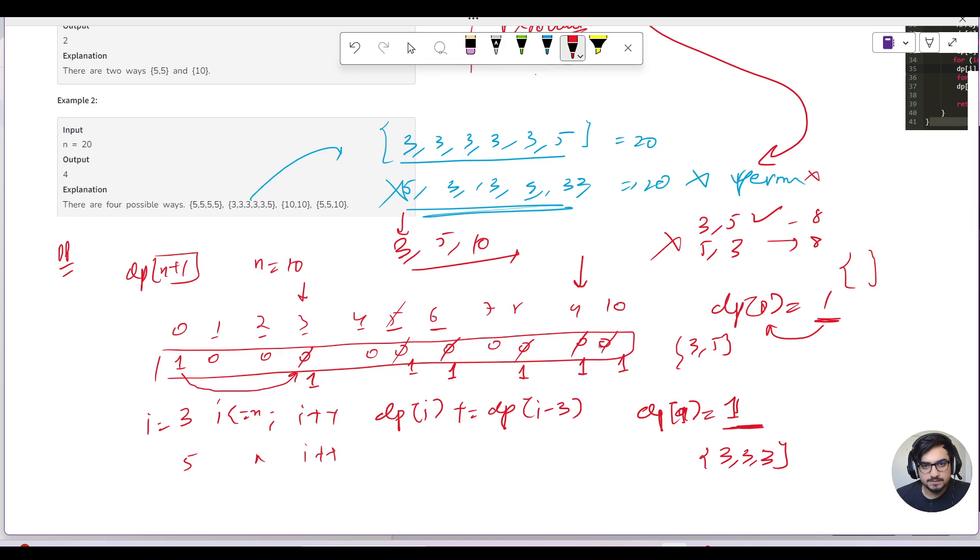Now let us update for the last, that is i=10. We'll start from i=10, go to less than equal to n, i++. So we'll start from here and we'll update this. So 10-10 will give you 0. dp[0] is 1, so I'll update this as 2. And at the end, we'll just return dp[n] and that would be your answer.